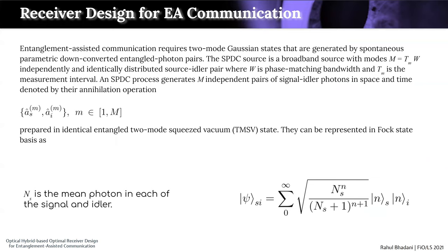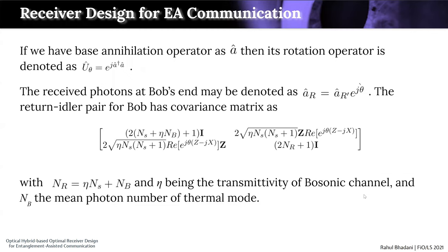Entanglement assisted communication requires two-mode Gaussian states generated by spontaneous parametric down conversion entangled photon pairs. The SPDC source is a broadband source with modes m equal to T_m W, which are identically and independently distributed signal-idler pairs, where W is the phase matching bandwidth and T_m is the measurement interval. The SPDC process generates m independent pairs of signal-idler photons in space and time, denoted by annihilation operators, prepared in identical entangled two-mode squeezed vacuum states representable in Fock state basis. The base annihilation operator is â, and the phase is denoted û. At the receiver side, Bob receives the photon denoted â_r, and we have a covariance matrix term with n_r equal to η·n_s + n_b, where n_b is the mean photon number of the thermal mode and η is the transmissivity of the bosonic channel.